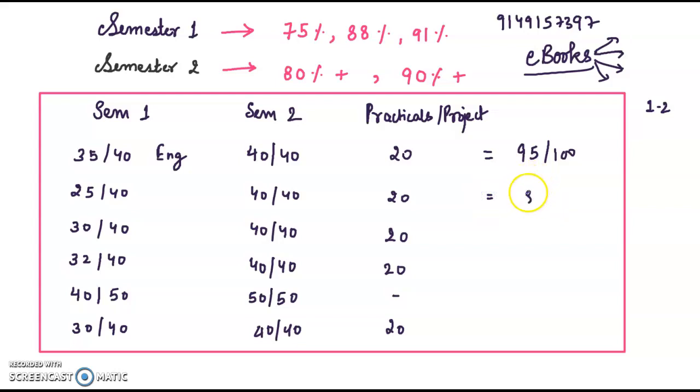95 out of 100, then 85 out of 100, 90 out of 100, 92 out of 100, 90 out of 100 and 90 out of 100. And grace marks are no way possible. I don't know why you see misleading videos talking about grace marks.